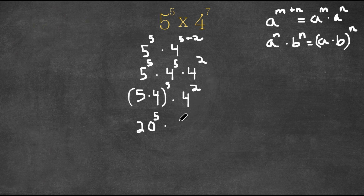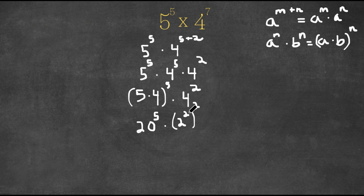Well, 4 is the same thing as 2 to the power of 2, so we have 2 to the power of 2 to the power of 2. So now we have 20 to the power of 5 times 2 to the power of 2 to the power of 2.